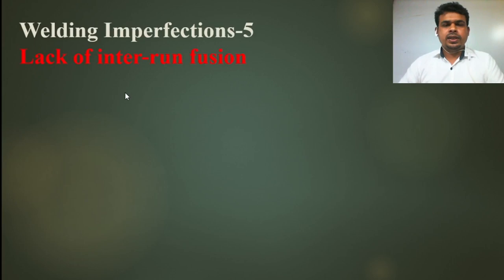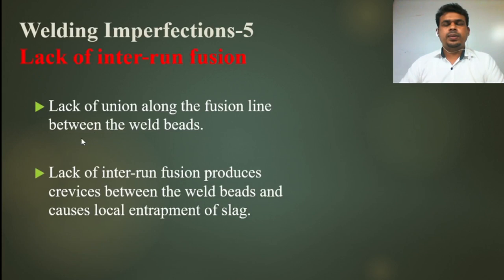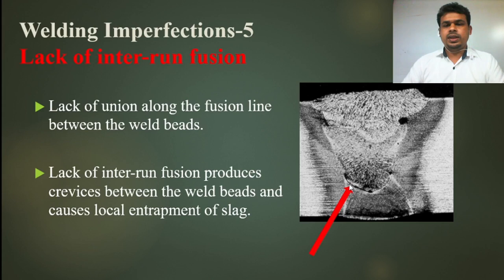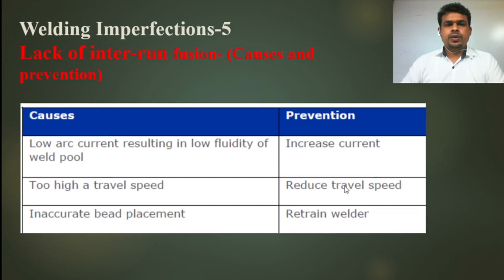Lack of interrun fusion is the lack of union along the fusion line between the weld beads. In multi-run welding, if one run does not melt properly with the next, this is called lack of interrun fusion. It produces crevices between the weld beads and can cause local entrapment of slag. As you can see in the picture, two weld layers are not melted properly. The cause can be low arc voltage resulting in low fluidity of the weld pool — you can resolve this by increasing the current.